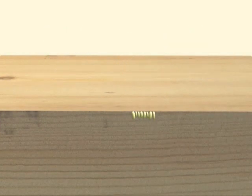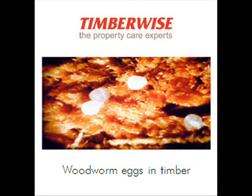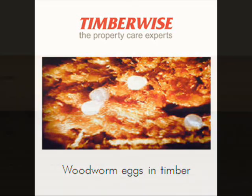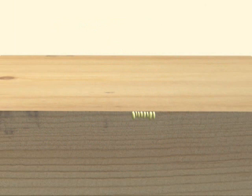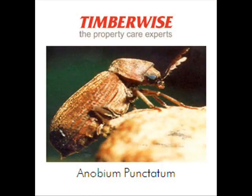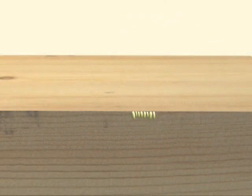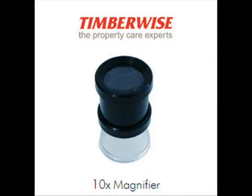And why does she lay the eggs into the timber rather than onto the surface? The female beetle is very maternal and she will seek out as safe a place as possible to protect the eggs from surface predators. And is it possible to see the eggs? If you look very carefully, you can see the eggs with the naked eye. However, if you use a magnifier, you will be able to see that they are oval in shape and usually laid in batches of anywhere between 20 and 60.